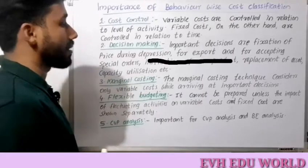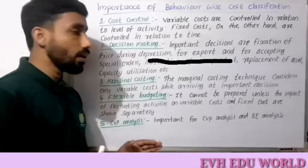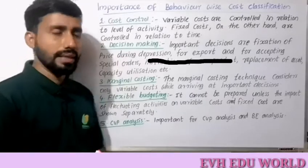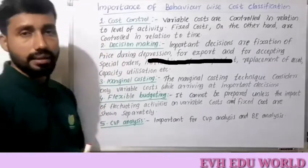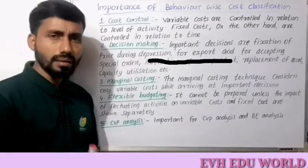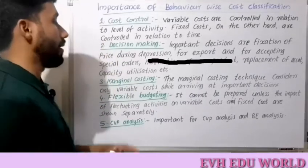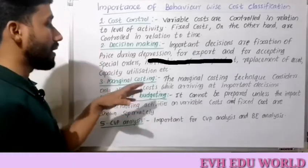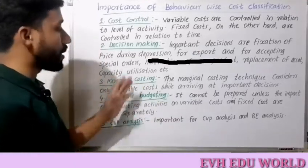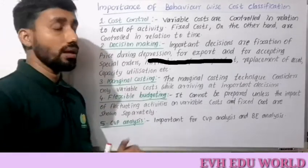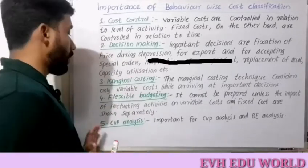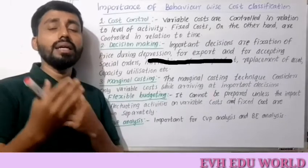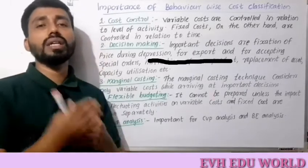The marginal costing technique considers only variable costs when arriving at important decisions. Next is flexible budgeting. In this case, the flexible budgeting plan applies to both variable cost and fixed cost. We can apply classification based on behavior to flexible budgeting.